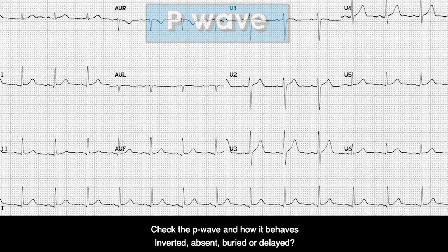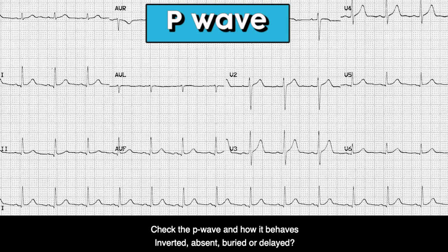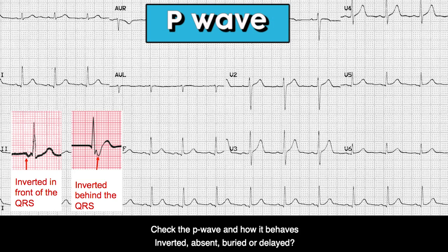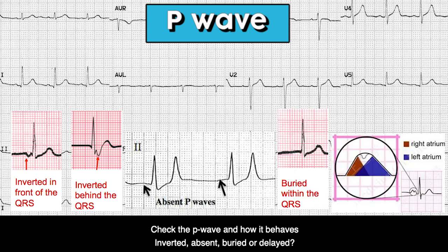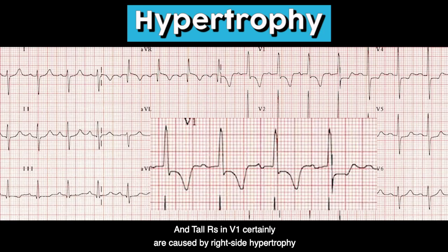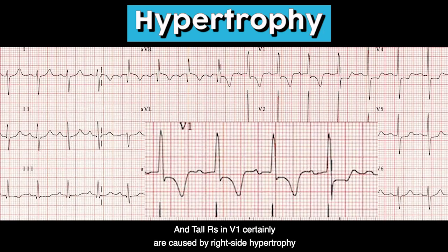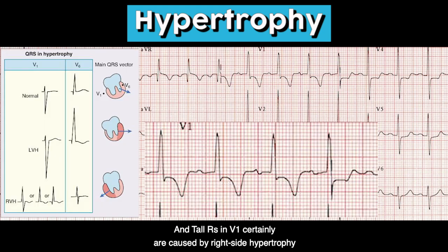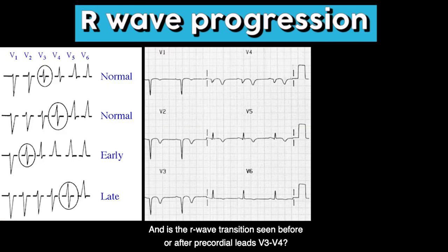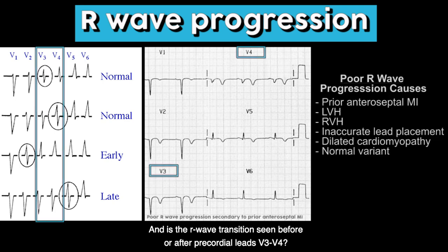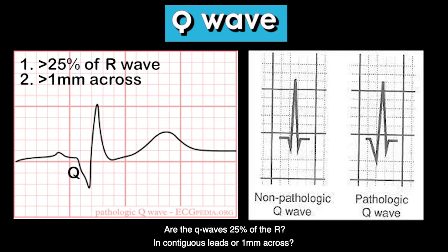Check the P-Wave and how it behaves — inverted, absent, buried, or delayed. And tall R's in V1 certainly are caused by right side hypertrophy. And is the R-Wave transition seen before or after precordial leads V3, V4? Are the Q-Waves 25% of the R? And contiguous leads are 1mm across?